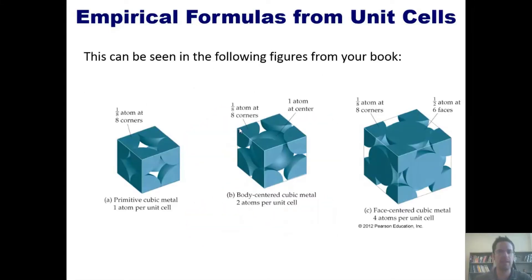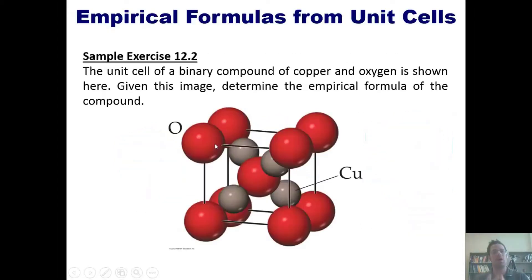As I showed in this slide, anytime you have a sphere located at one of the vertices of your unit cell, there's only one eighth of that sphere that's actually inside the unit cell. Therefore, only one eighth of each of the spheres at these vertices counts towards the empirical formula.